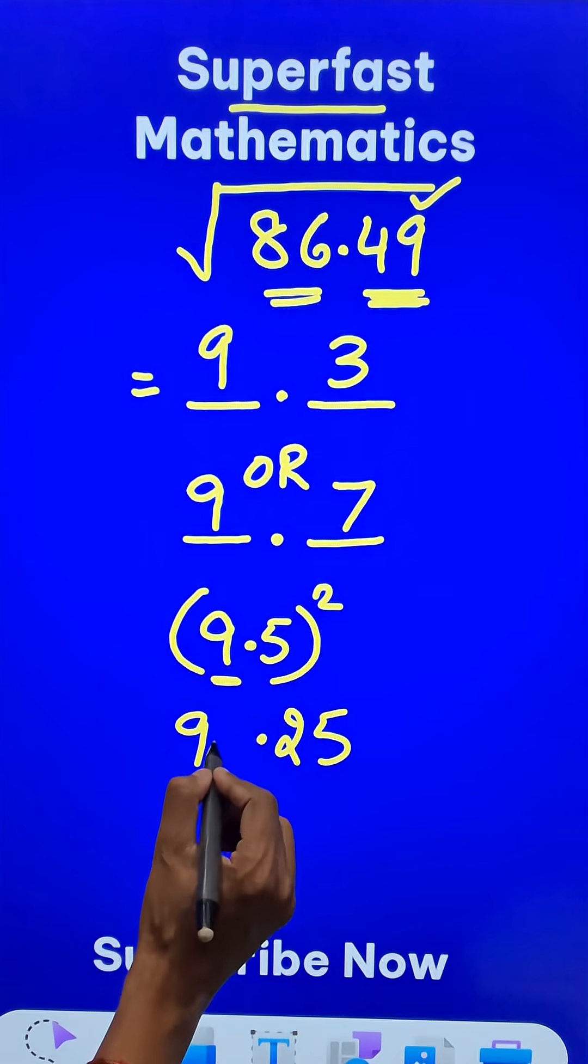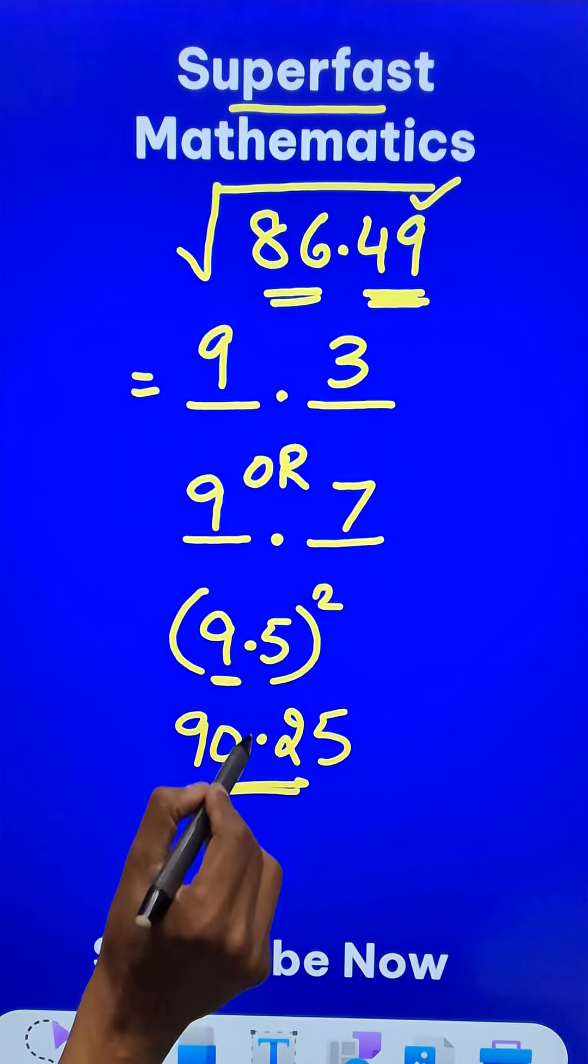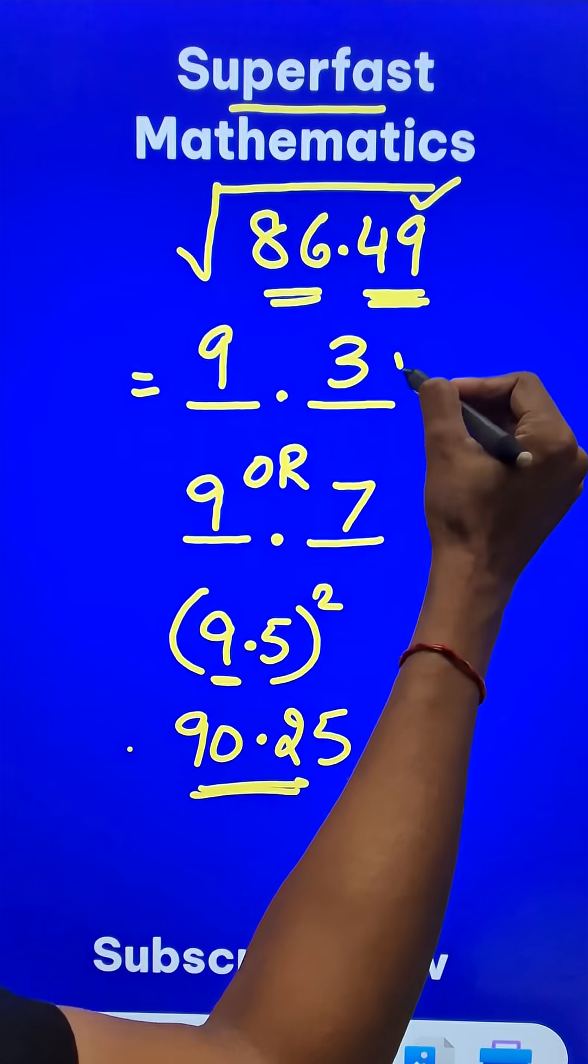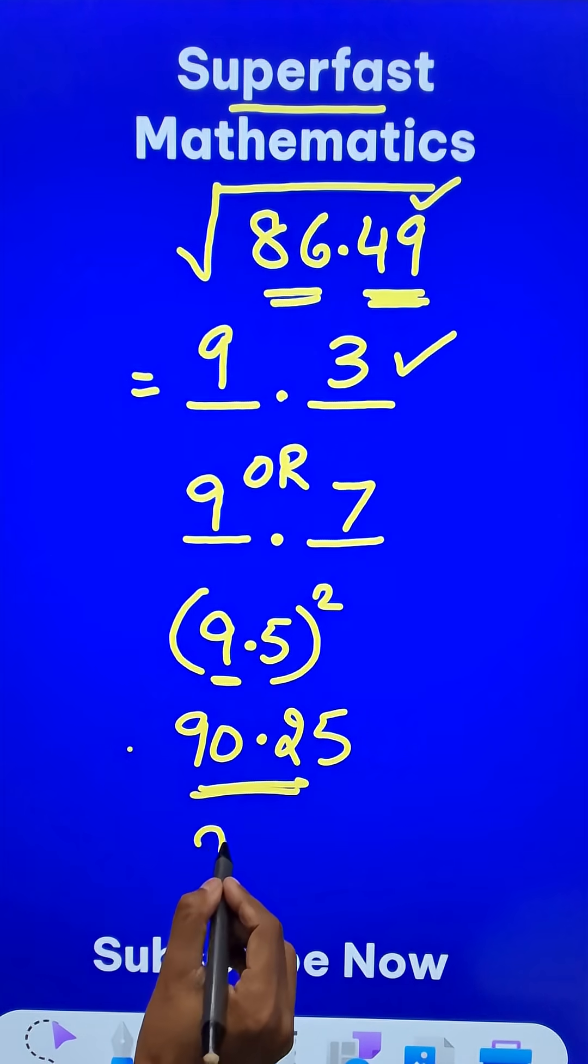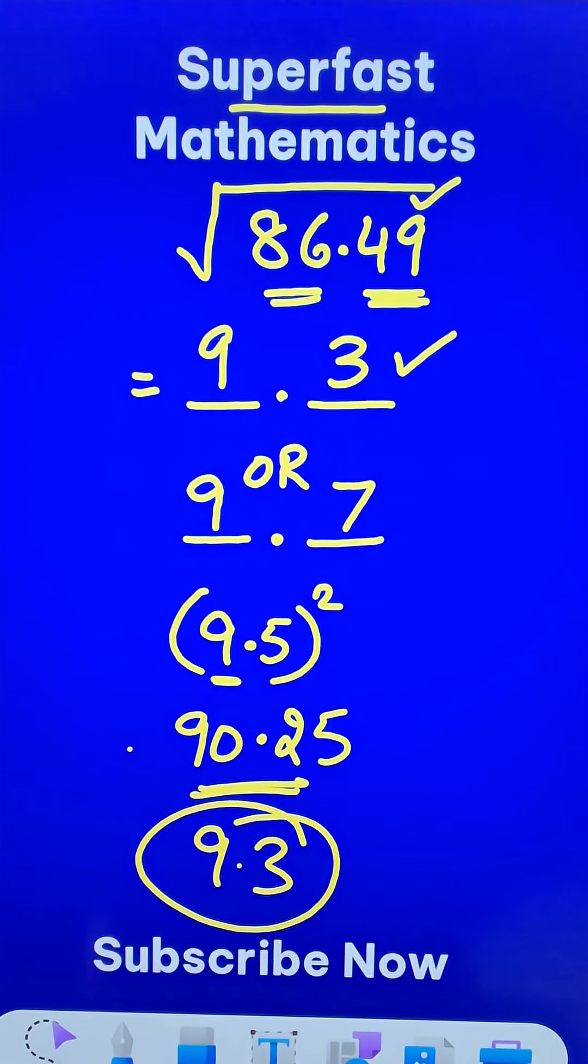And my number here 86.49 is smaller than this and therefore my answer is the smaller one out of these two and therefore the answer is 9.3. Now you can pick up the calculators and check using the traditional approach.